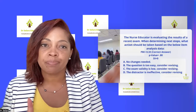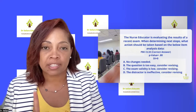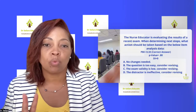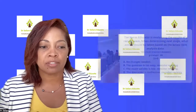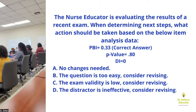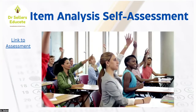You want to be very clear about what the question is asking. The four answer choices are: A — no changes are needed; B — the question is too easy, consider revising; C — the exam validity is low, consider revising; and D — the distractor is ineffective, consider revising. Think about what you know for sure and what the question is asking you.